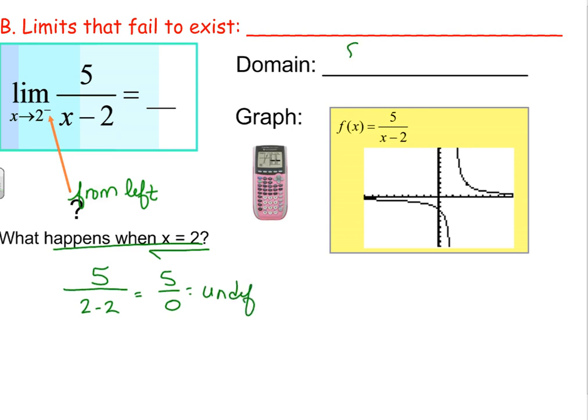The domain on this function would be the set of all x's such that x is a member of the real numbers but cannot be equal to 2. But every other value of x would be just fine. Now if I look at the picture of this, as I approach 2...